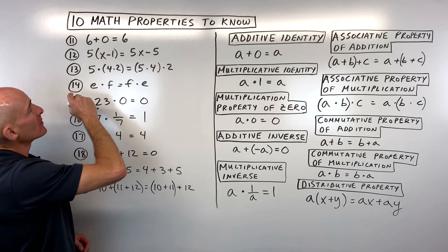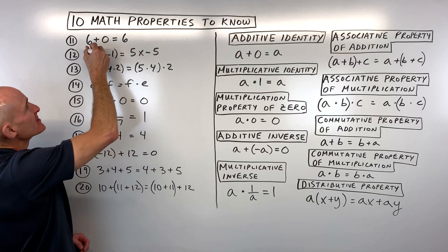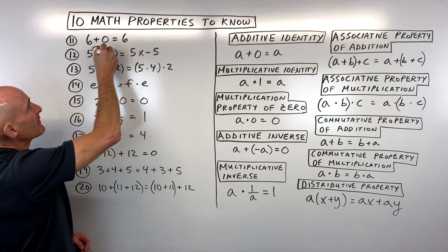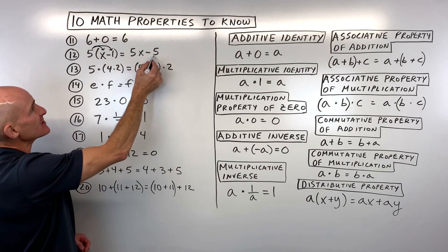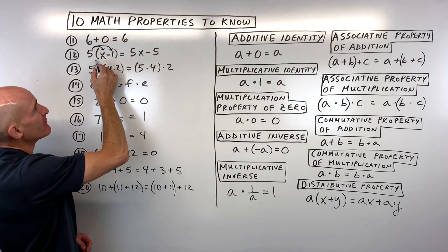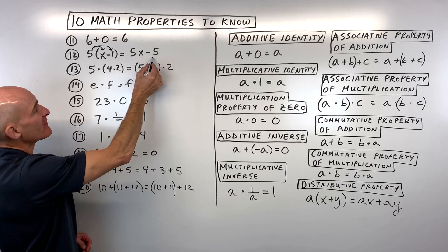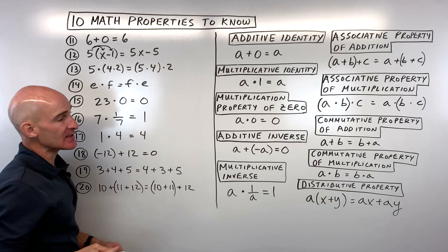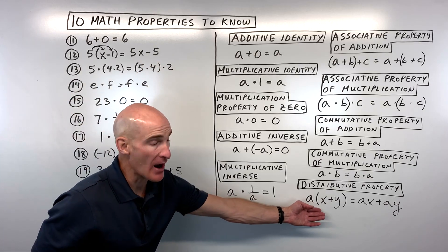Number 12: you can see we multiplied that five into the parentheses — five times the quantity (x minus 1) equals 5x minus 5 — that's the distributive property.